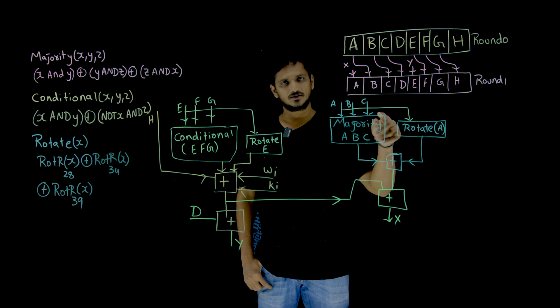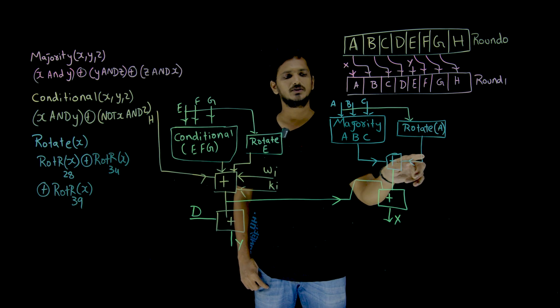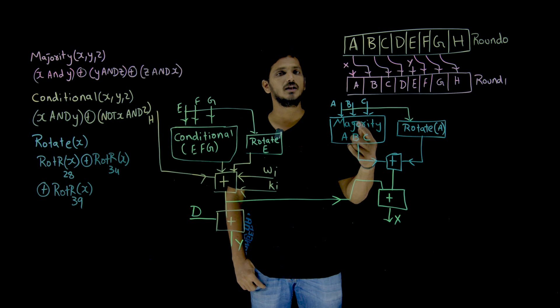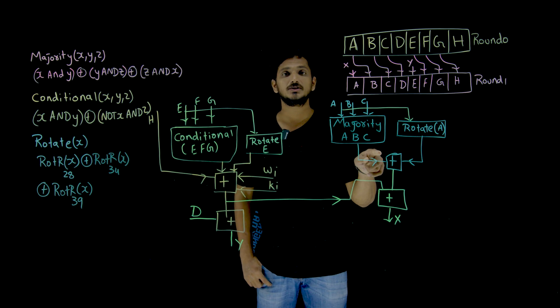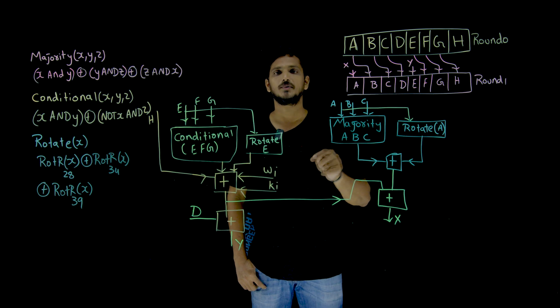Similarly, A is sent into the next function, rotate function, rotate of A. It is going to generate 64 bits. These two 64 bits again, it is going to get addition. It means addition modulo 2 power 64. That is what happens here.